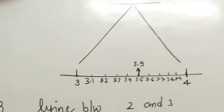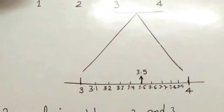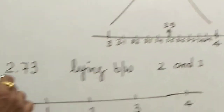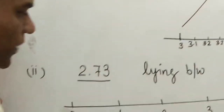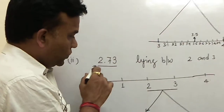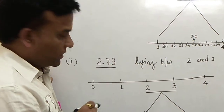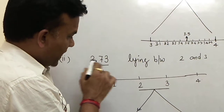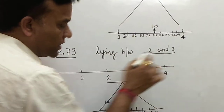Because 3.5 has only a single decimal place digit, one magnification is enough. Now we have the next number: 2.73, which has two decimal places. The number 2.73 lies between 2 and 3.